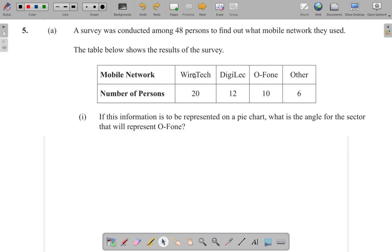So you have the mobile network and the number of persons that use them. 20 use WireTech. DigiLogic had 12, O-phone 10, and other, there are 6 persons.